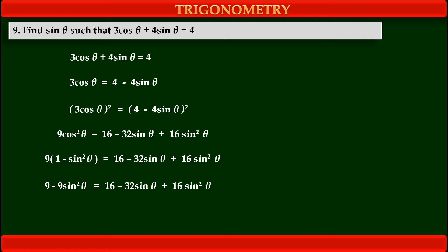Now we have only one variable, sin theta, in this equation, and it is also quadratic. So first we have to change this equation into proper quadratic form by collecting terms of sin²theta together, then the term of sin theta, and then the constant. Rearranging these terms we get 25sin²theta minus 32sin theta plus 7 is equal to 0. Here, 16 plus 9 gives 25sin²theta, the middle term is minus 32sin theta, and 16 minus 9 gives the constant 7. So this is the proper quadratic form: 25sin²theta minus 32sin theta plus 7 equals 0.